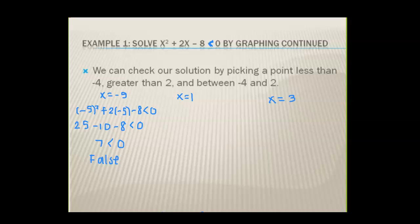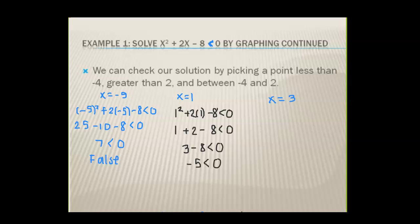Plugging in positive one, or any number between negative four and two, we get one squared plus two times one minus eight, which is one plus two minus eight. One plus two is three, three minus eight has to be less than zero — so we get negative five, which is less than zero. Yes, so values between negative four and two will be true.